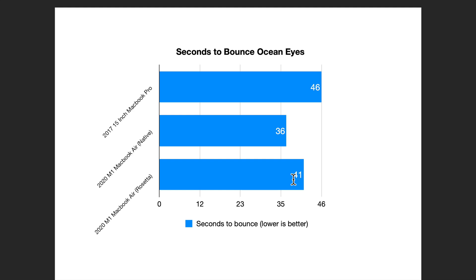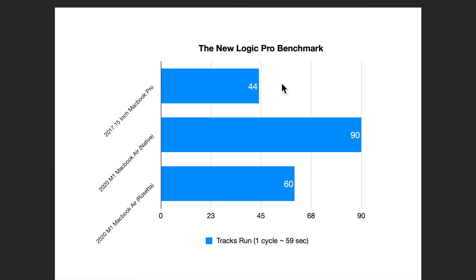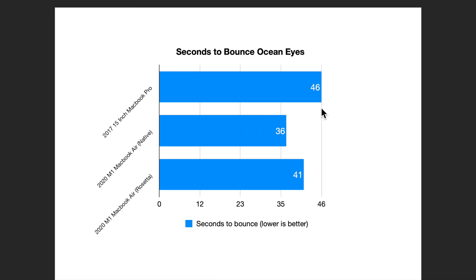If you missed my other video, these are the results we got running the new Logic Pro benchmark: 44 tracks for the MacBook Pro, 90 tracks running Logic natively on the M1 MacBook Air, and 60 tracks running Logic via Rosetta. So it's kind of the same pattern, although clearly not as big a difference in the overall results.